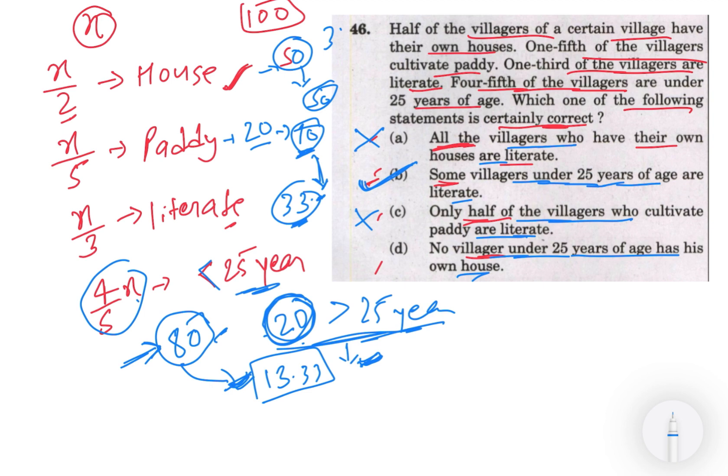So abhi bhi 30 log aur bache hai jinke paas apna ghar hai. Toh woh 30 log is 80 meh se hi 30 log aayenge, matlab 25 saal se kam meh hi 30 log aayenge. Iska matlab yeh jo no villagers likha hai yeh possible nahi - yeh matlab villagers hai jo 25 saal se kam hai aur jinka apna ghar hai, matlab yeh bhi statement galat hai.